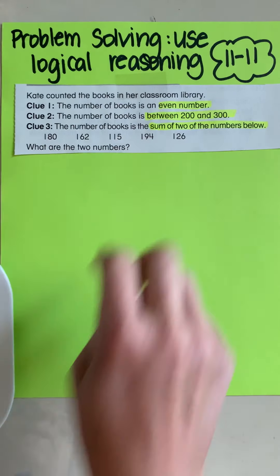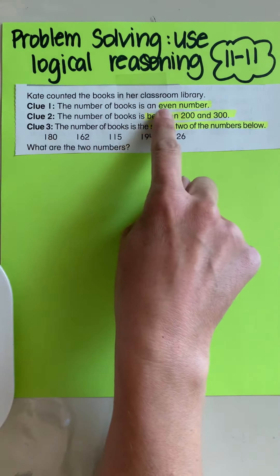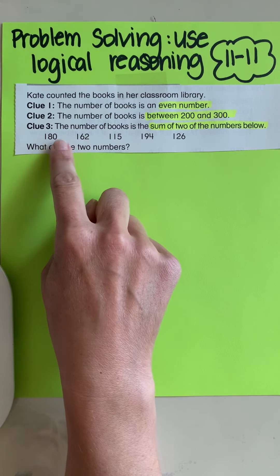What are the two numbers from here? So I'm going to focus on clue number one. I'm going to start first. The number of books is an even number. So I know I have to choose two of these numbers for it to be an even number.